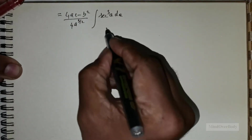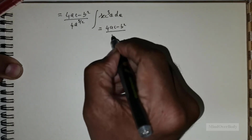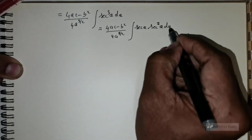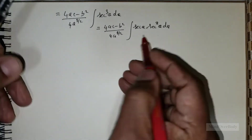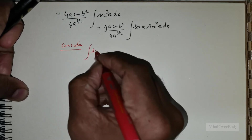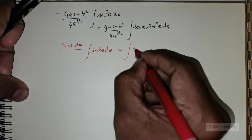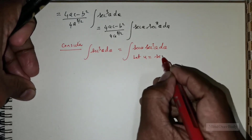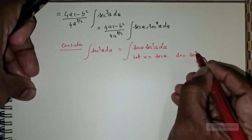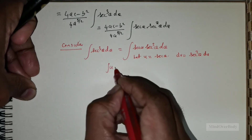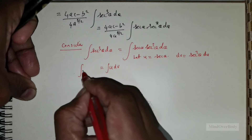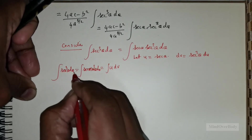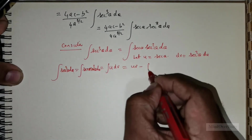We need to use integration by parts. Rewriting this as (4ac − b²) / (4a^(3/2)) times the integral of sec θ · sec²θ dθ. Let u = sec θ and dv = sec²θ dθ. So the integral of udv, which is the integral of sec³θ dθ, equals uv minus the integral of v du.